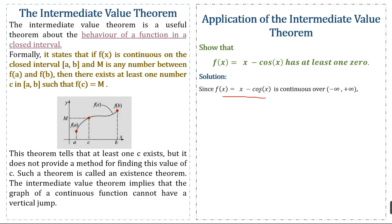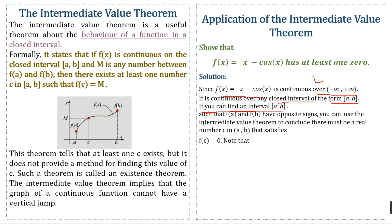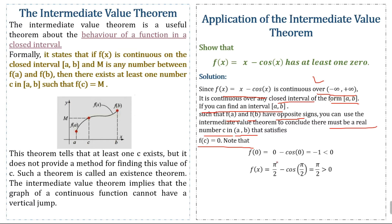Since f(x) is continuous over the interval (-∞, +∞), it is continuous over any closed interval of the form [a, b]. Now we have to find a closed interval such that f(a) and f(b) have opposite signs. If they have opposite signs, we can use the Intermediate Value Theorem to conclude there must be a real number c in that interval where f(c) = 0.